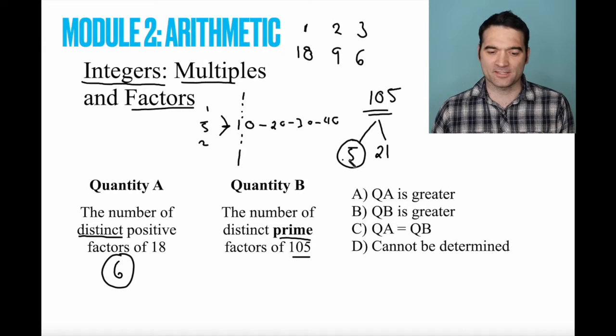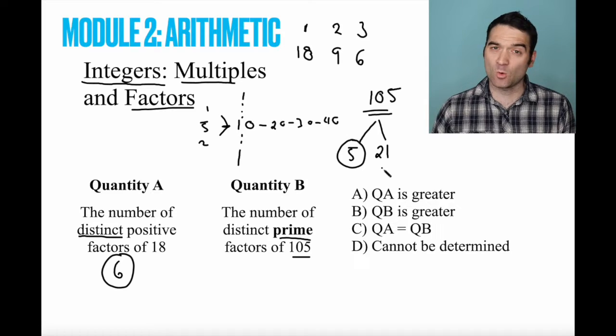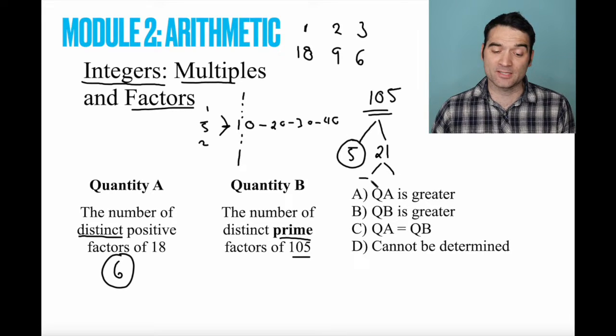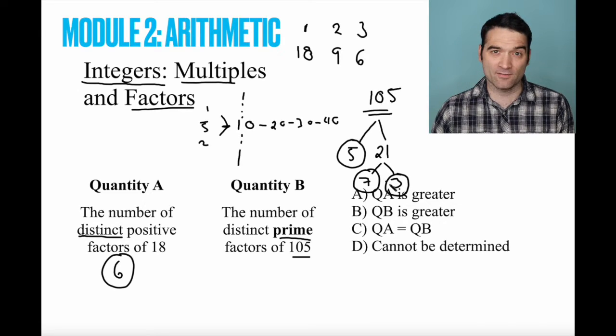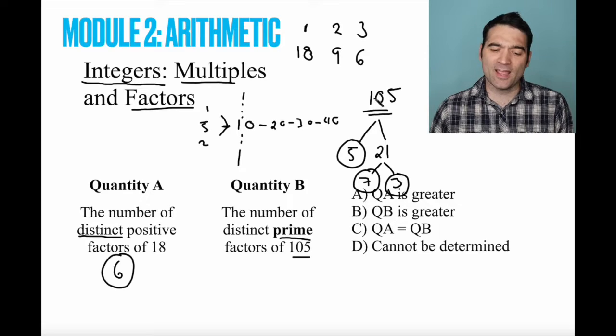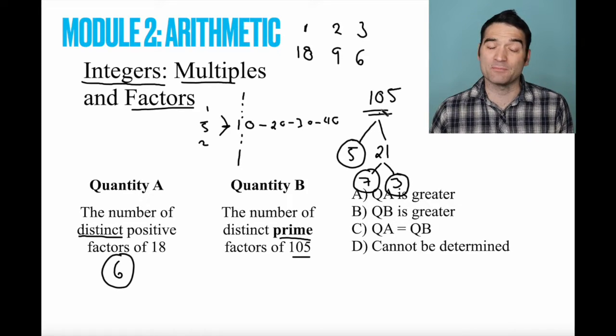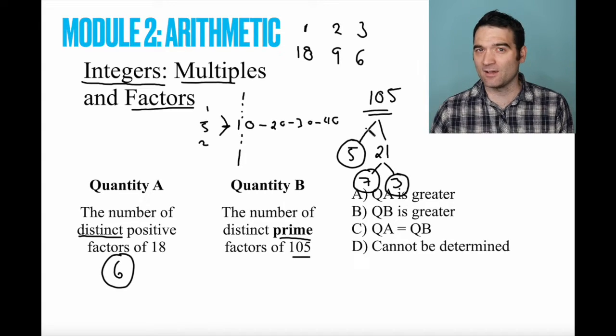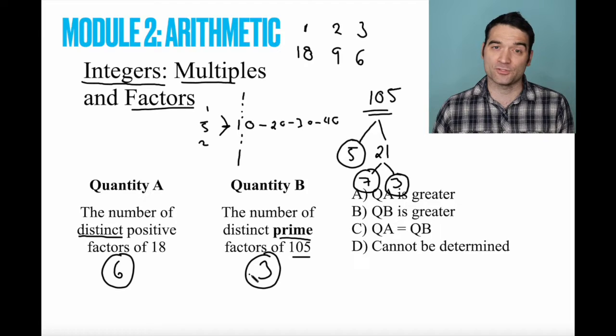Once I have a prime number, that's it, right? I can't break that down any further. 5 is a prime number. Is 21 a prime number? No. That breaks into 7 and 3, which are each prime numbers. So I've reached the end of the tree here. It's important to note, and I invite you to do this, that if I had broken 105 down a different way, like 7 times 15, I would have still ended up with the same three numbers. So the number of distinct prime factors is 3.